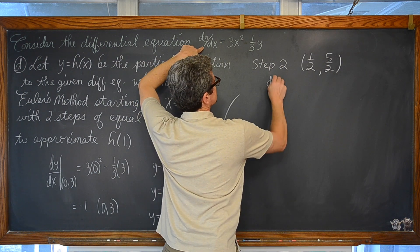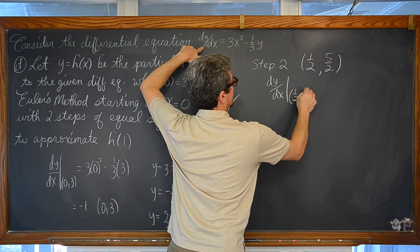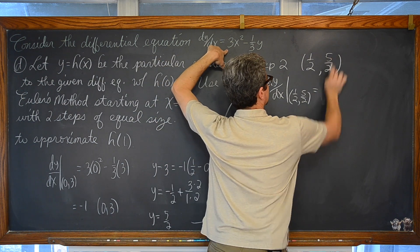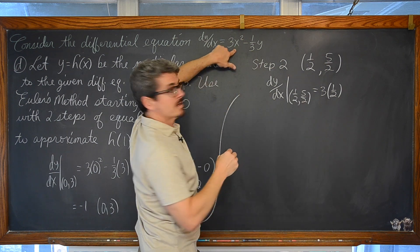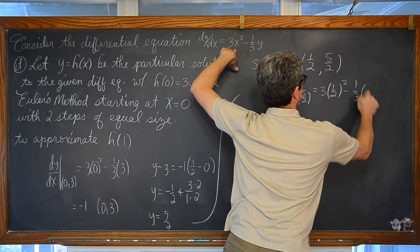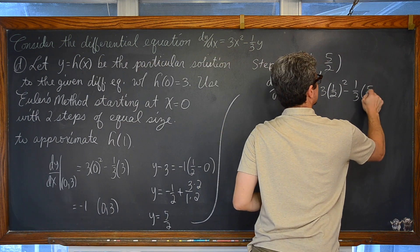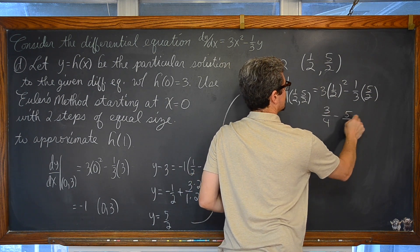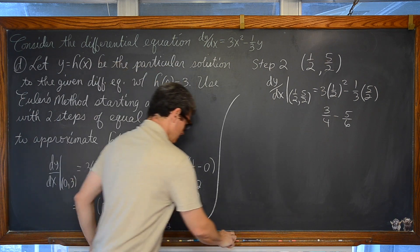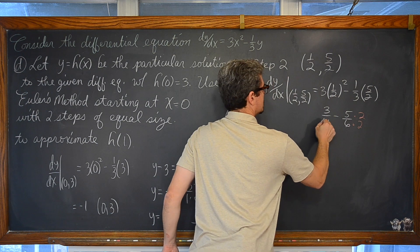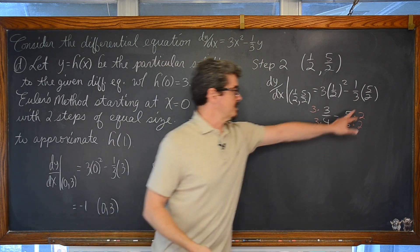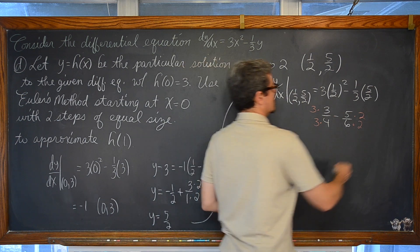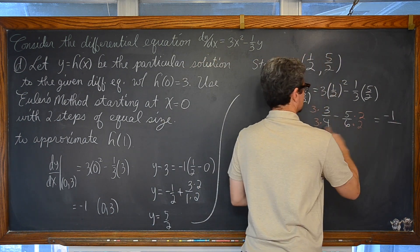So now we need to know what the slope of the tangent line is at this approximated point. dy/dx at (1/2, 5/2) is equal to 3 times (1/2)² minus 1/3 times 5/2. We are looking at 3/4 minus 5/6. We need a common denominator, so we are going to multiply by 2 over 2 and 3 over 3. We have 9 minus 10, so negative 1/12.